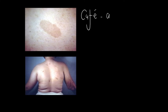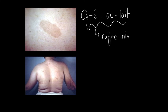Here we have an example of café au lait spots. 'Café au lait' comes from the French for 'coffee with milk,' making reference to the light brown color of the spots. Here you can see an example of a café au lait spot — I'm just going to draw around it with a green marker. This is a zoomed-out macroscopic image on a lady's back.